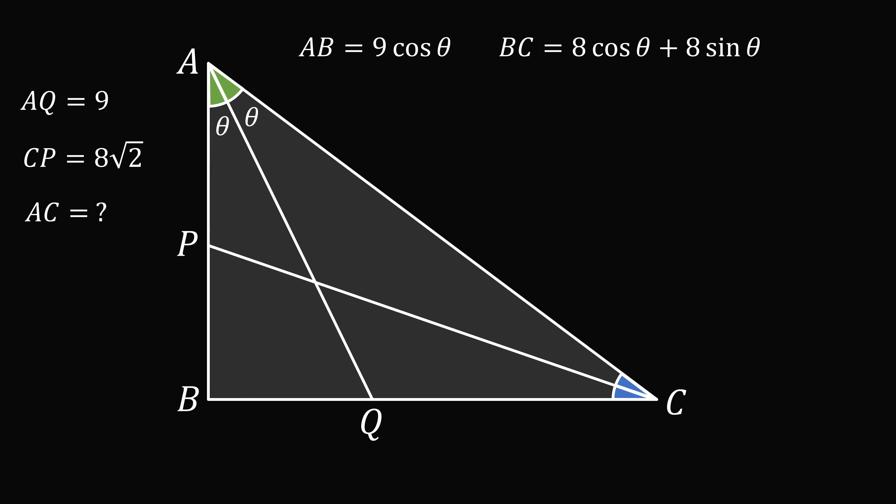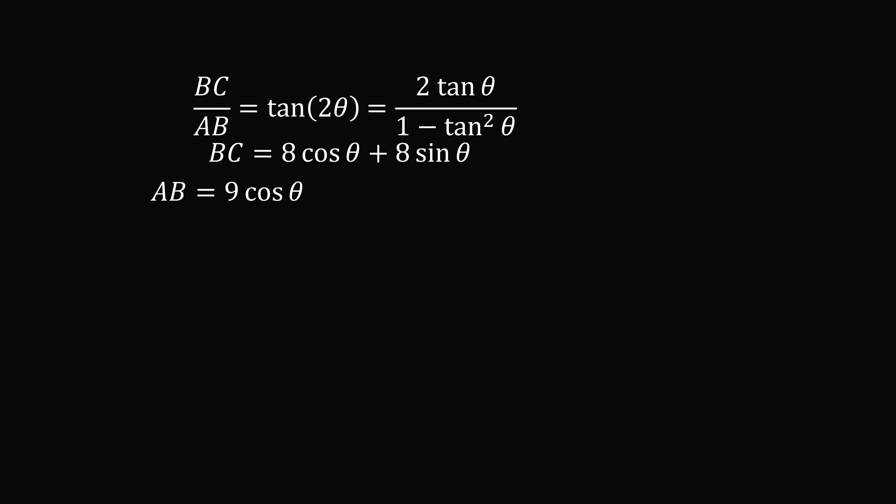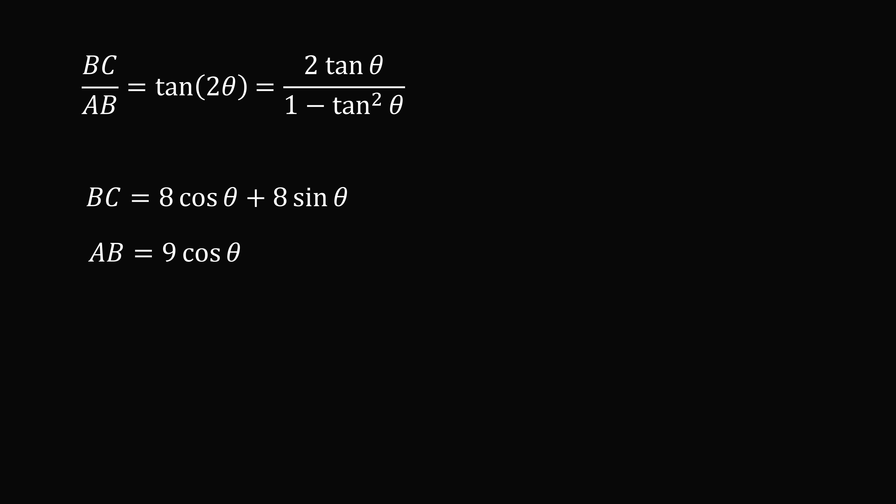Now, let's consider the entire triangle ABC. BC divided by AB is equal to the tangent of 2 theta. We can then use the double angle formula to get that this is equal to 2 tangent theta divided by 1 minus tangent squared theta. So, let's just look at these equations. From the equations for BC and AB, let's take BC divided by AB. We can then divide through by 9 cosine theta, so we get that BC divided by AB is equal to 8 ninths tangent theta plus 8 over 9.